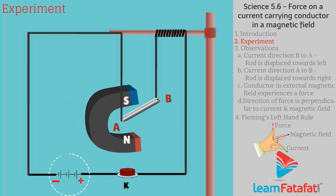Connect aluminium rod in series with battery, key and rheostat. Now press the key so as to allow the current flow.